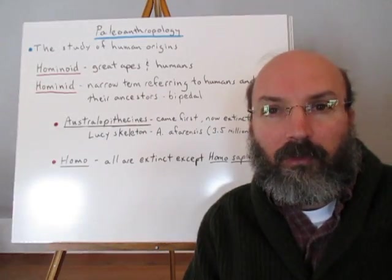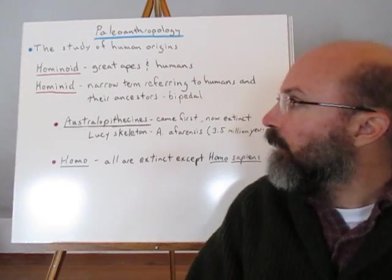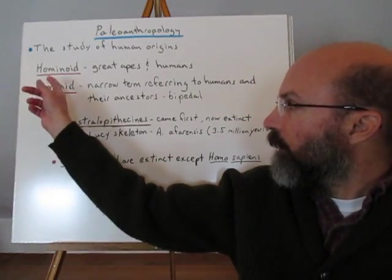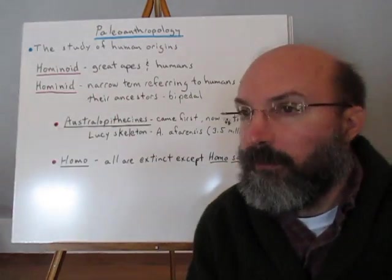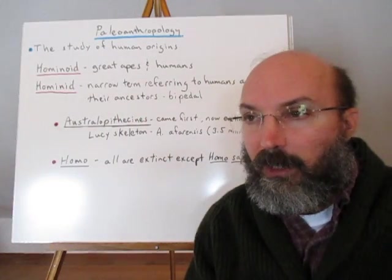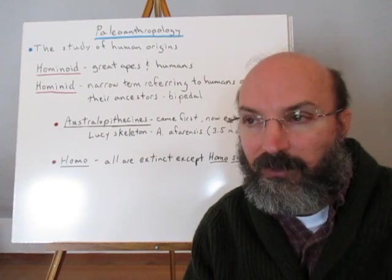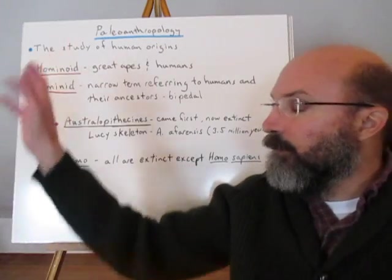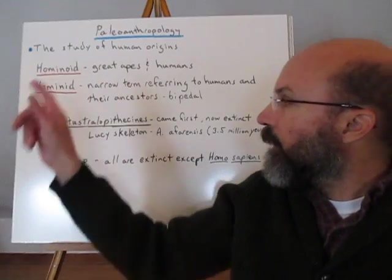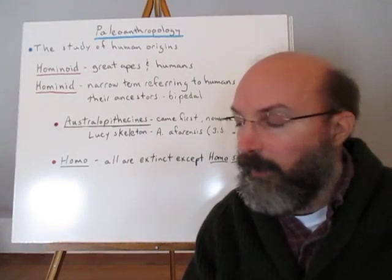Paleoanthropology is the study of human origins. When we study human origins we look at both hominoids — the great apes and humans — and hominids, which are the bipedal humans and their close ancestors. It's a common misconception that humans are the ancestors of chimpanzees. There may be some common ancestor back much further in this hominoid group, but humans are not ancestors of chimpanzees or gorillas.